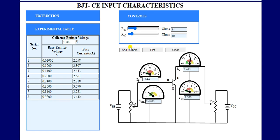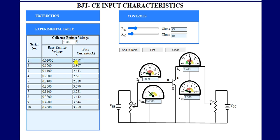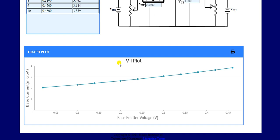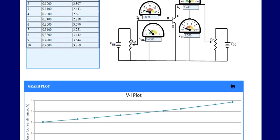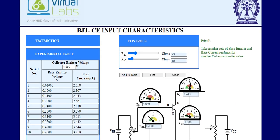These are our values — this is our experimental table. These are the base-to-emitter voltages and the corresponding base current values in microamperes. Now click on the Plot button and you will get a graph between VBE and IB.